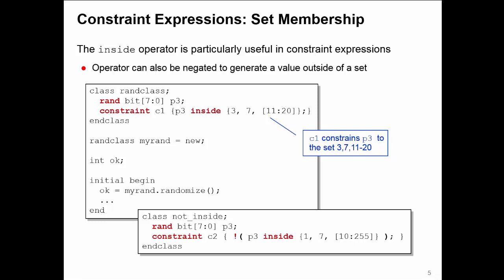Be careful with the syntax here. We are enclosing the inside constraint in curved brackets, and then using an inversion in front of that to say that we are inverting this constraint. P3 has to take a value outside of the list of values 1, 7, and 10 to 255.